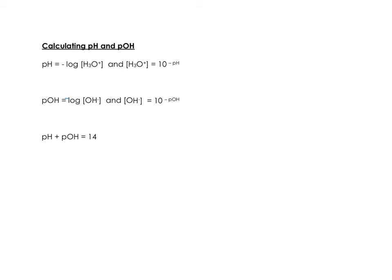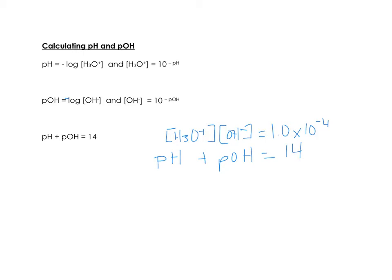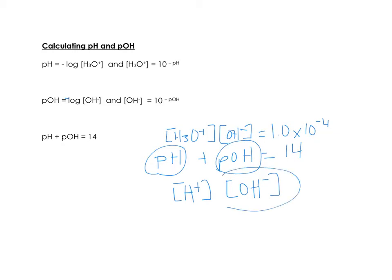The pH plus the pOH equals 14, and that's because of this relationship, the Kw. If you take the log of both sides of this, you get pH plus pOH equals 14. So if you have the pH of a substance, you can find the pOH, and if you have the pOH, you can find the pH. You'll also be able to find the hydrogen ion concentration, or the hydronium ion concentration, and the hydroxide ion concentration — all of these can be found because of this Kw expression.